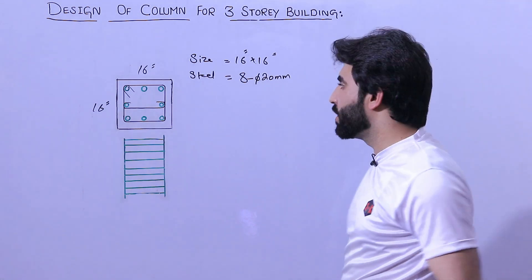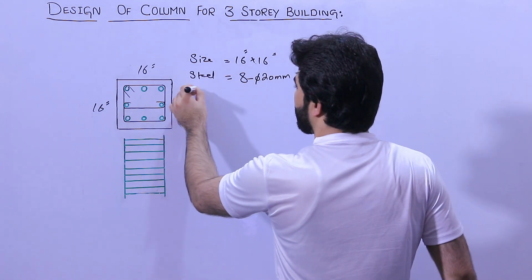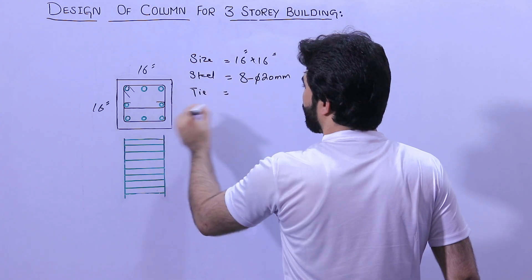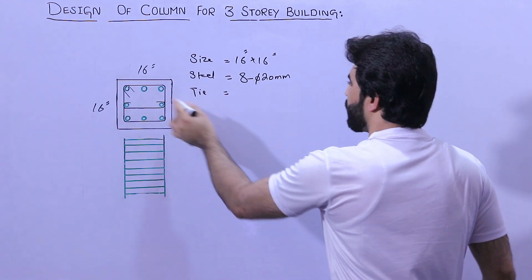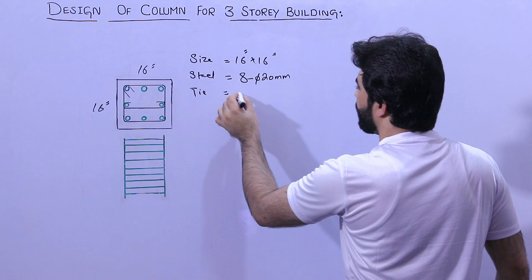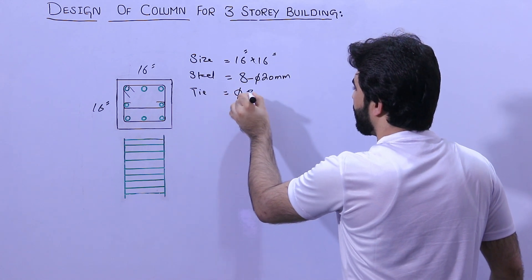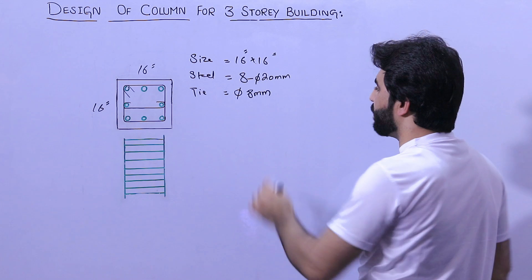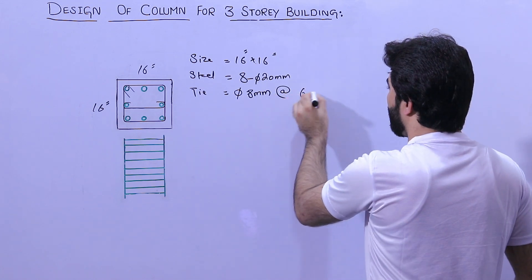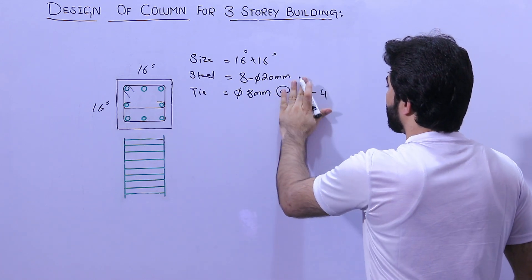Next, the ties details. You can see this is link tie. So the first one we used here, we used 8 millimeter diameter of steel reinforcement with the spacing of 4 to 6 inches center to center.